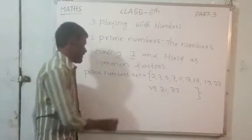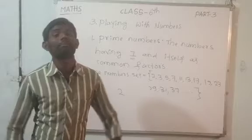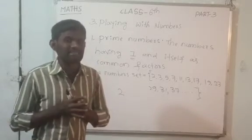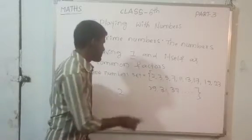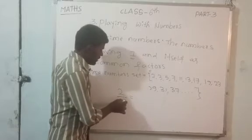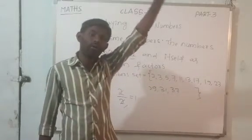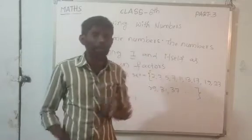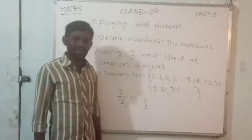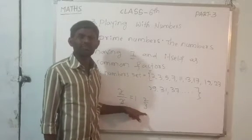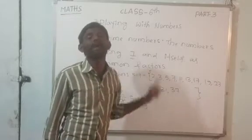Take 2: 2 divided by 2 gives quotient 1, remainder 0 — so 2 is a factor of itself. Then 1 is a common factor for all numbers. Now take 2 divided by 3: 3 is not a factor of 2 because 3 cannot divide 2 exactly. So the factors of 2 are only 1 and 2 itself.